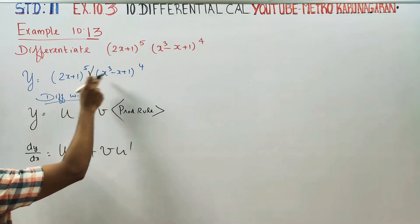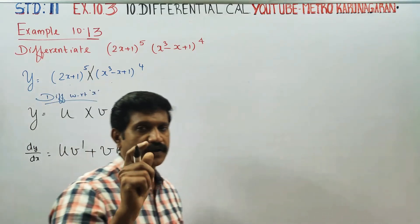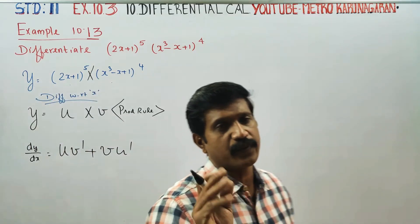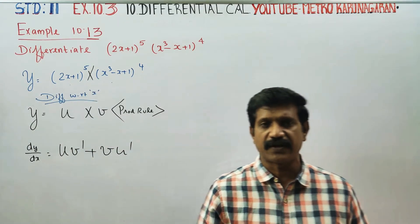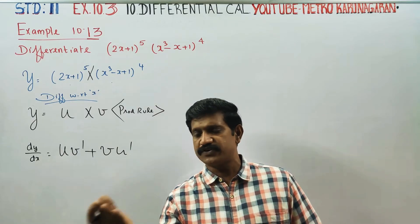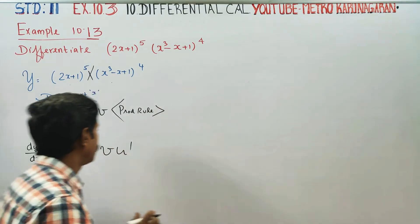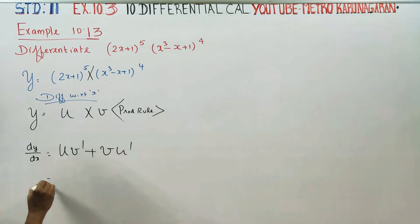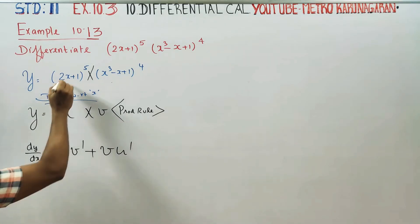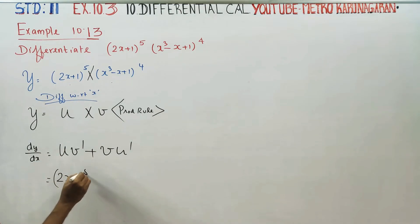When multiplication is present, you cannot differentiate directly — you have to apply the product rule. Using the product rule formula: (2x plus 1) whole power 5 is assigned as u.